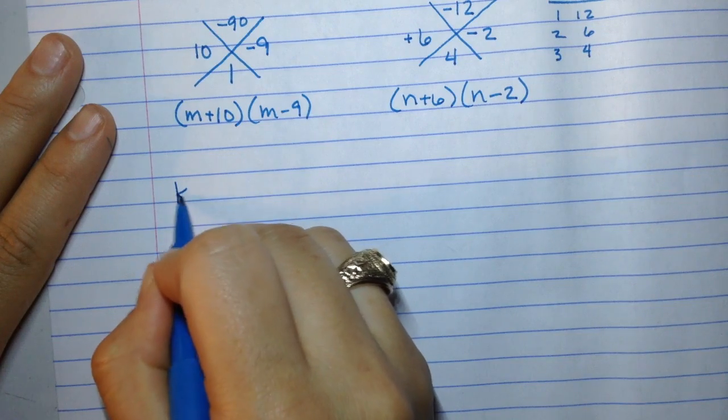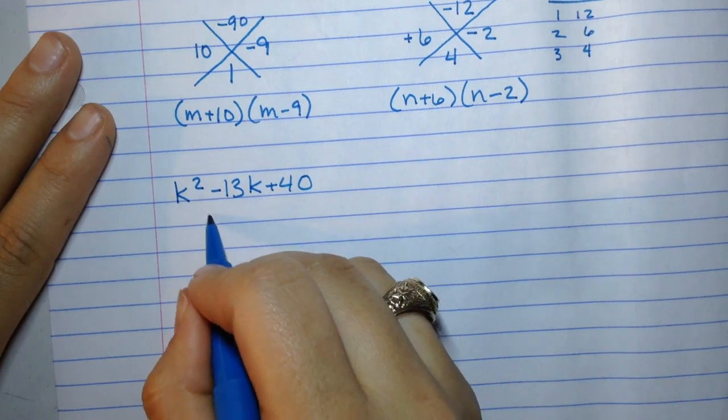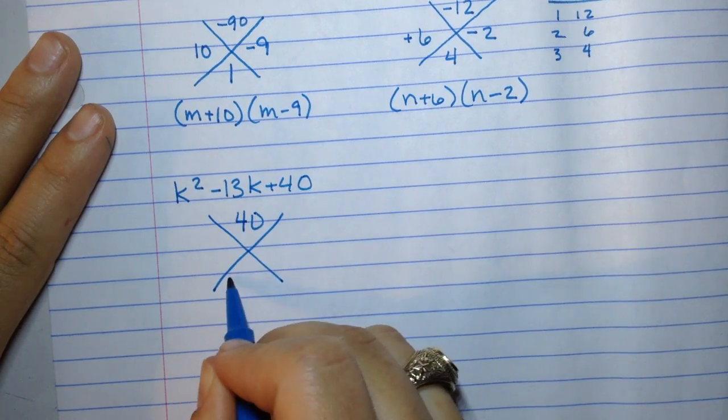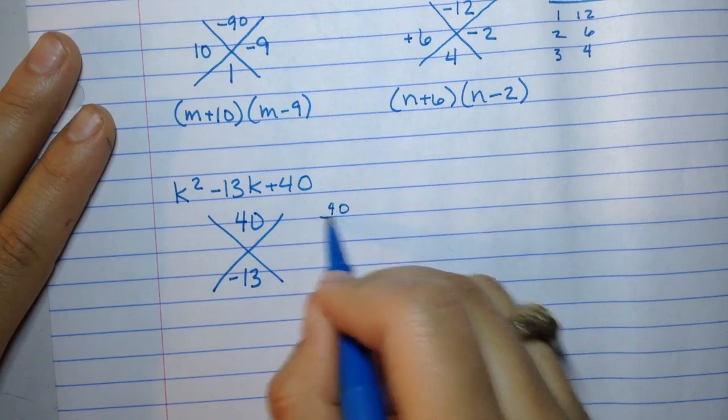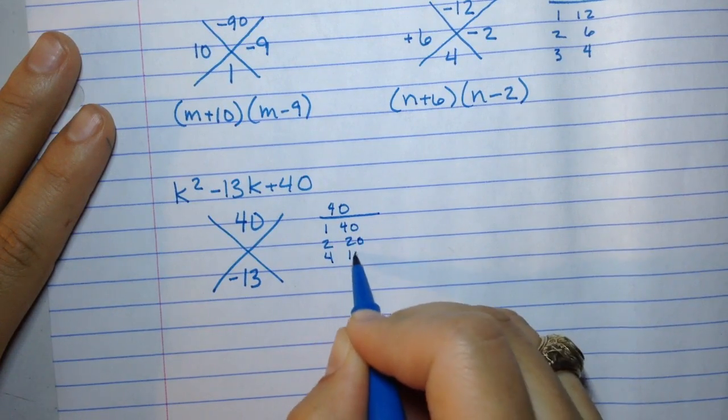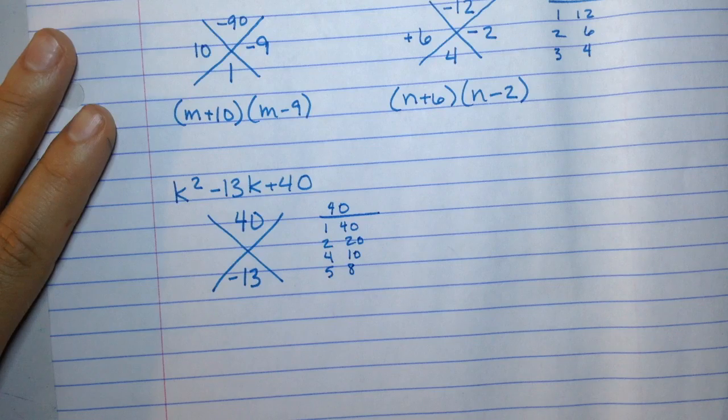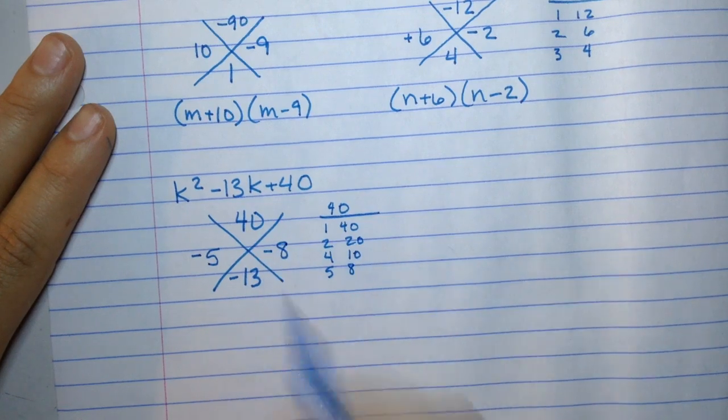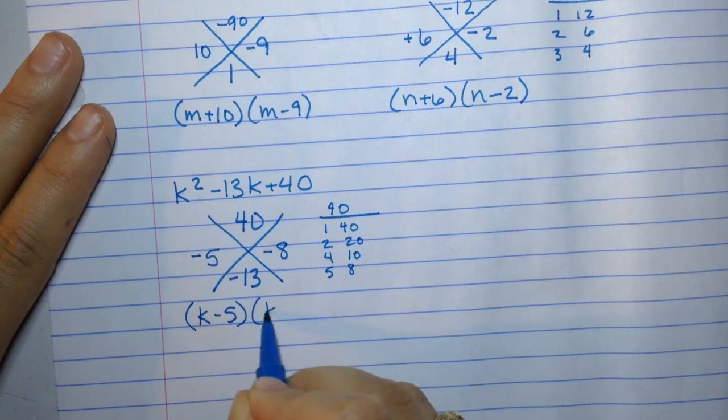Second to last example here, we have k squared minus 13k plus 40. We set up this x puzzle. a is 1, c is 40, 1 times 40 is 40, negative 13 in the denominator. Oh boy, factors of 40. Let's start at the beginning. You have 1 and 40, 2 and 20, 3 doesn't go, 4 and 10, 5 and 8, 6 doesn't go, 7 doesn't go. There's all our factors. The only way that this can add up to 13 is some combination of 5 and 8. And in this case, they both have to be negative to get negative 13. So this would factor to (k minus 5)(k minus 8).